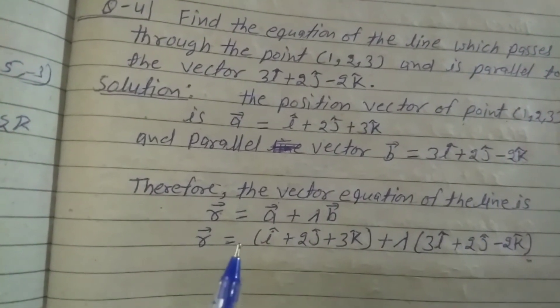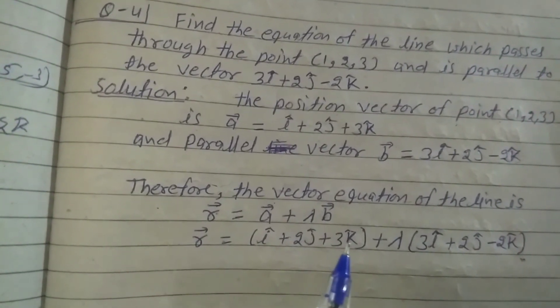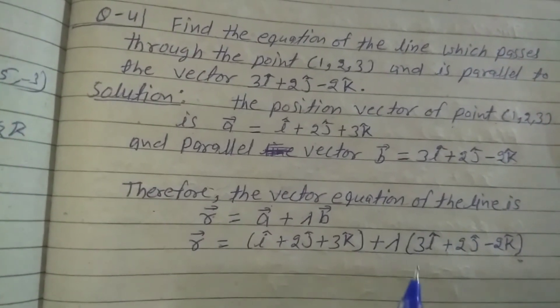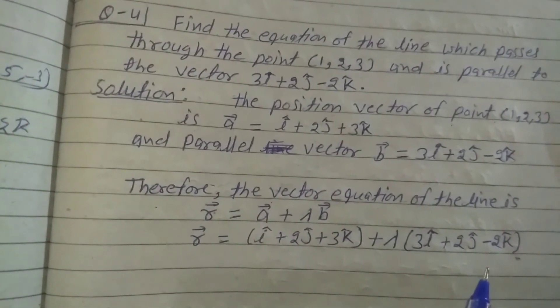So r vector equals (i cap plus 2j cap plus 3k cap) plus lambda (3i cap plus 2j cap minus 2k cap).